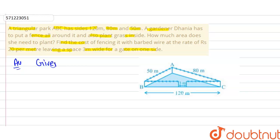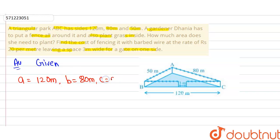First, write down the given information. The sides of the triangle are: side a is equal to 120 meters, side b is equal to 80 meters, and side c is equal to 50 meters.